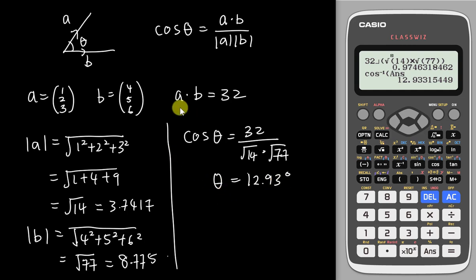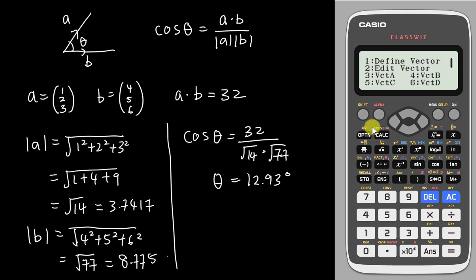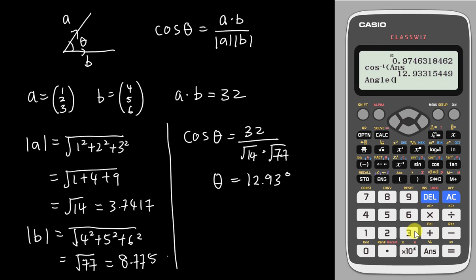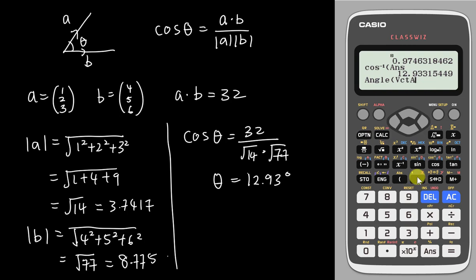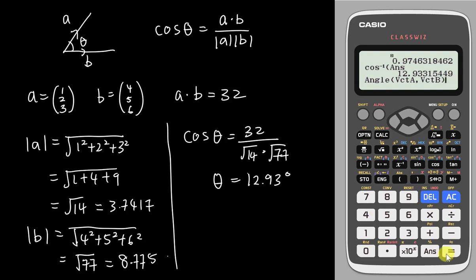But if I want to ask this calculator to do it for me directly, I go into option, then go to Angle, which is number 3. I tell the calculator I want the angle between vector A and vector B: I select option number 3 for vector A, then press Shift comma, then option for vector B. I close the bracket and get exactly the same answer — 12.93315449 degrees.